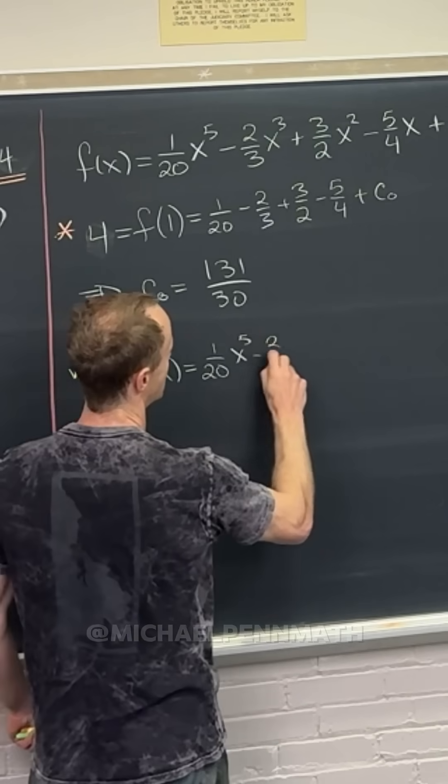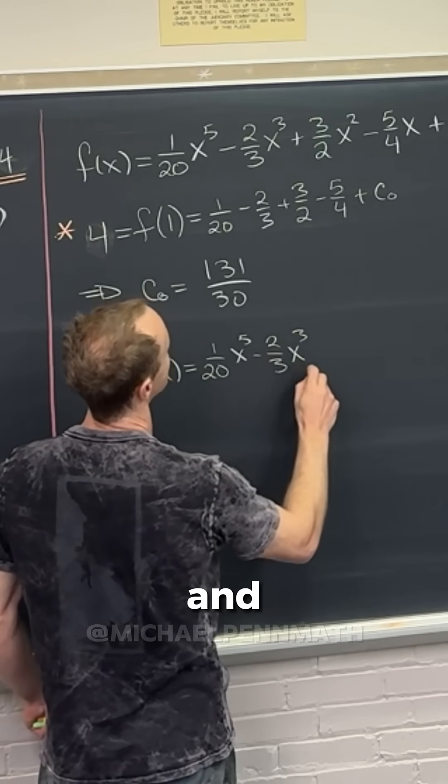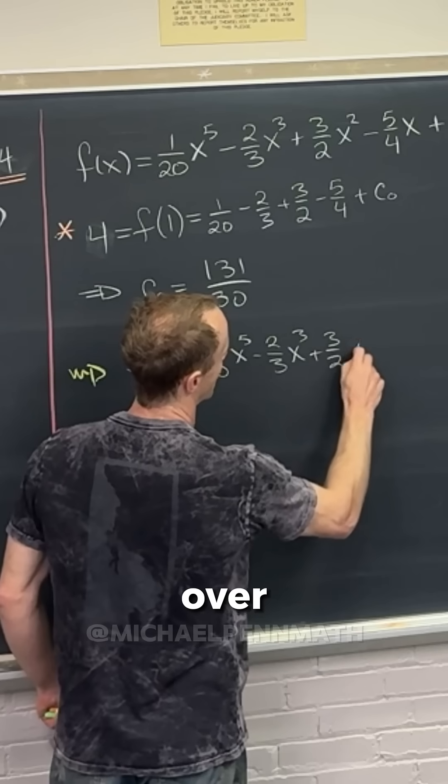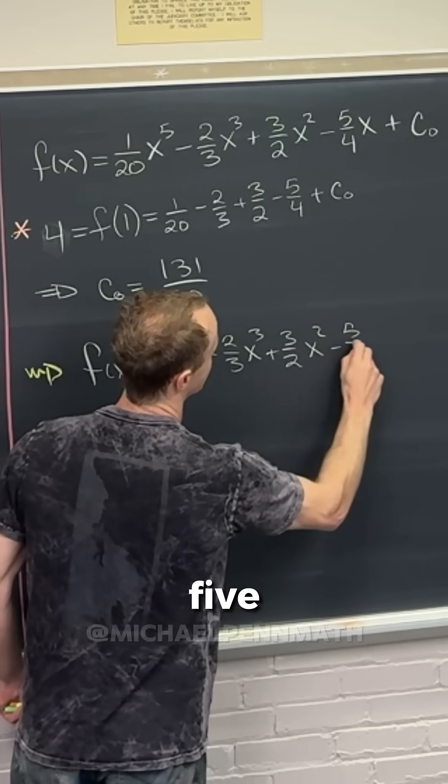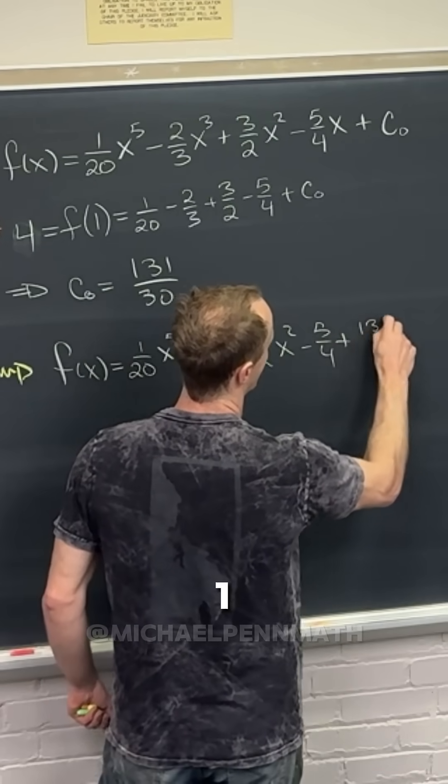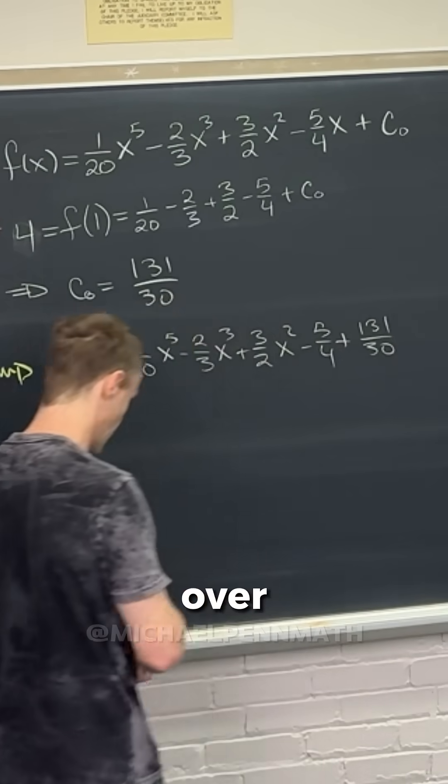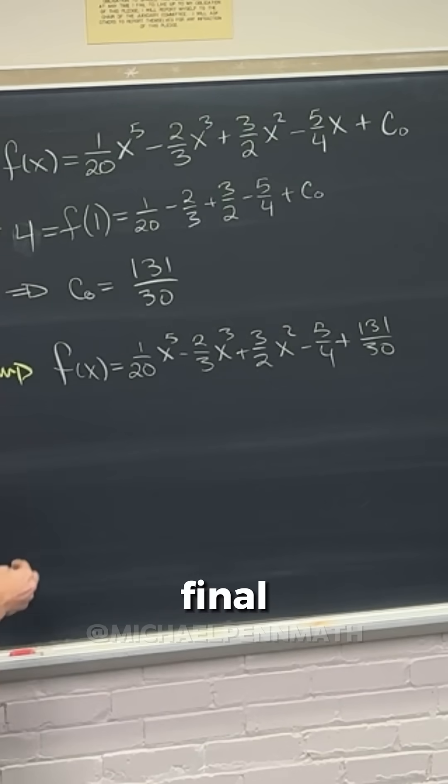But instead of writing c naught, I'm going to write this 131 over 30. So five fourths and then plus 131 over 30. And that would be like the final answer or whatever.